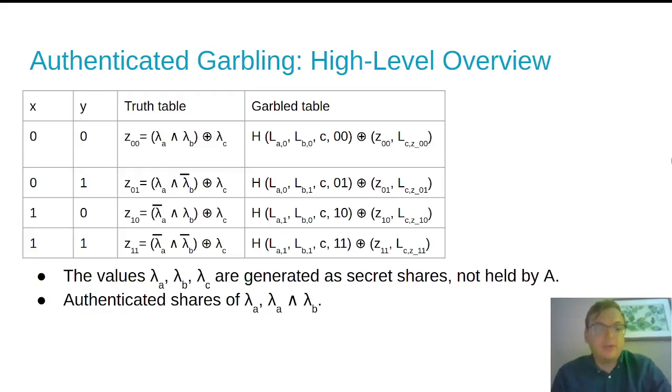Now, this truth table and the garbling in the semi-honest setting may or may not look recognizable, but the lambdas represent masks that hide from the evaluator the value of the wires. And then additionally, the evaluator will learn exactly one of the wire labels, LA0 or LA1, LB0 or LB1, which will allow them to read one row of the table.